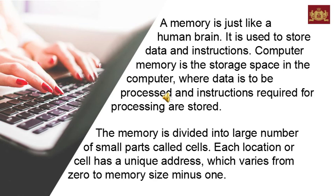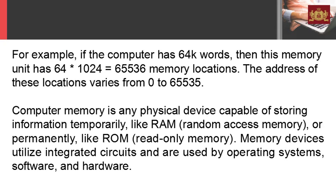Each location or cell has a unique address which varies from 0 to memory size minus 1. For example, if the computer has 64000 words, then this memory unit has 64 times 1024 equals 65536 memory locations. The address of these locations varies from 0 to 65535.